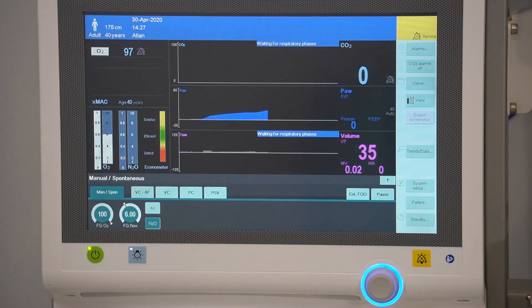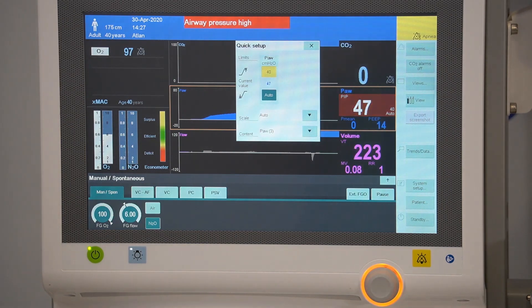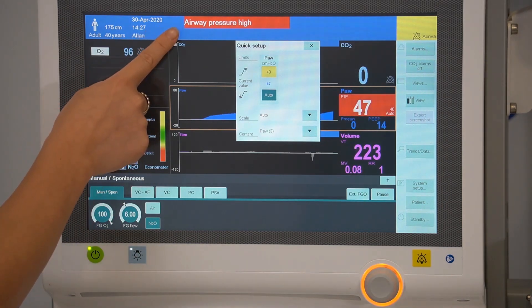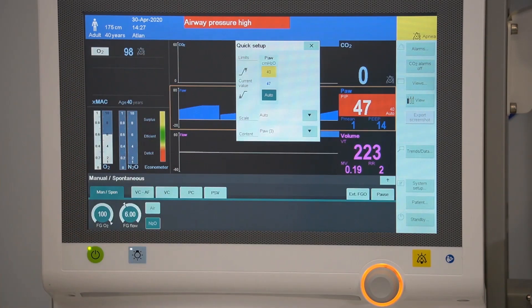Alarms are colour coded and assigned to three priority classes depending on their urgency. Messages with the highest priority are red in colour, this requires immediate attention. The message will be highlighted in red and you'll also hear a repetitive tone.